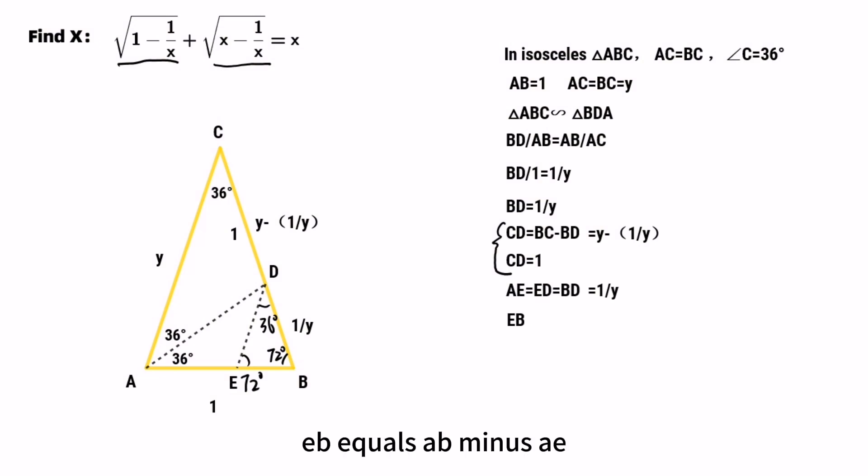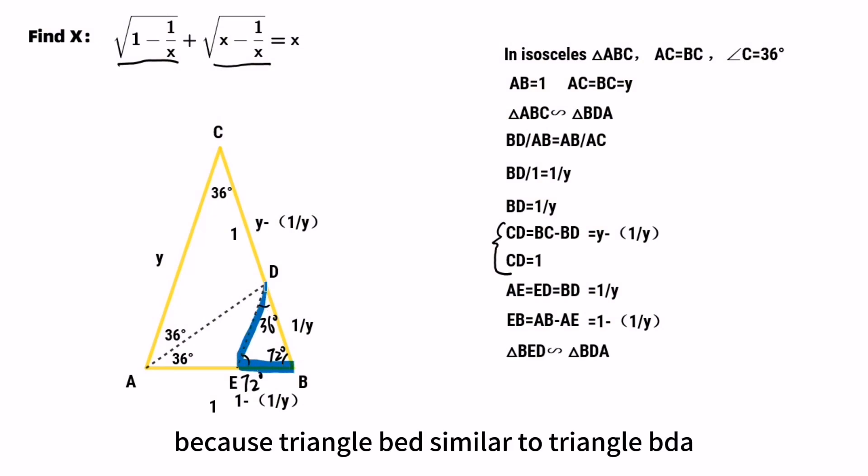So EB equals AB minus AE, which equals 1 minus 1 over Y. We can also find another value of EB in this golden triangle because triangle BED is similar to triangle BDA.